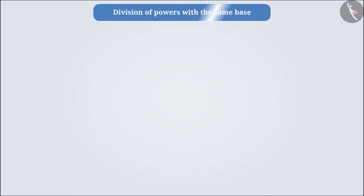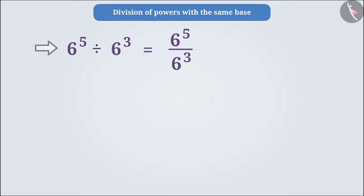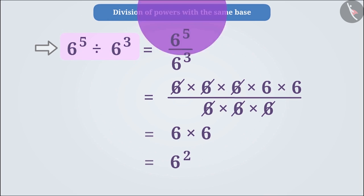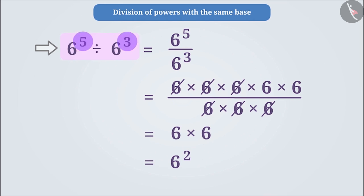Now let us learn about the rule for dividing numbers with powers having the same base. Let us simplify 6 to the power 5 divided by 6 to the power 3. These can be represented in the form of numerator and denominator. 6 to the power of 5 is 6 multiplied by itself 5 times and 6 to the power of 3 is 6 multiplied by itself 3 times. Upon solving, we get 6 into 6, which is equal to 6 squared. The power of the result is the subtraction of the powers of the numbers being divided.